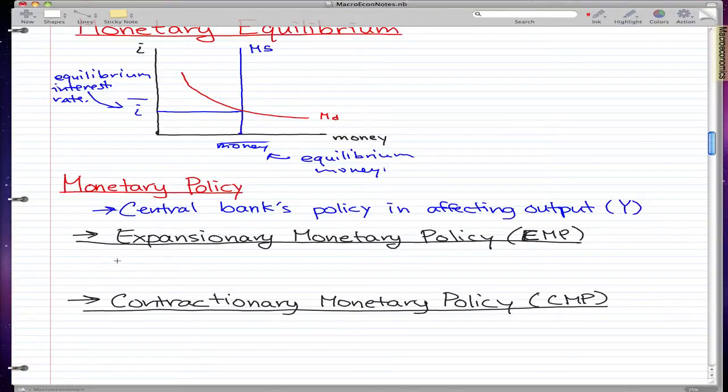Expansionary monetary policy and contractionary monetary policy is what I want you to know right now. So what happens in an expansionary monetary policy is that the money supply increases.